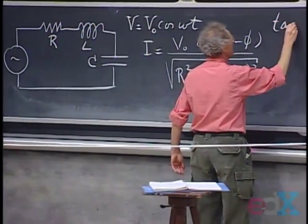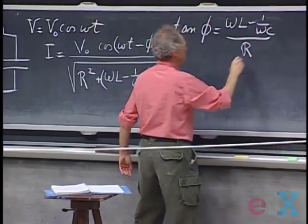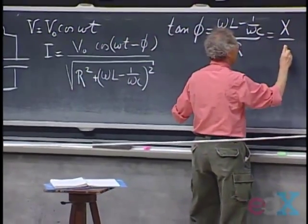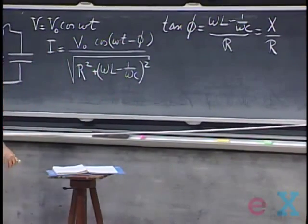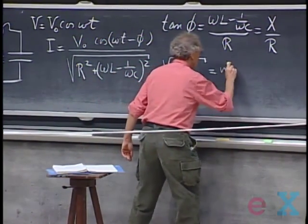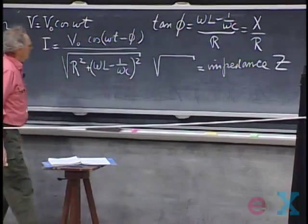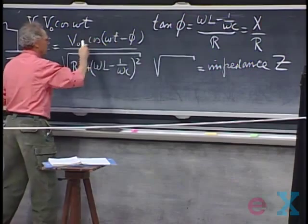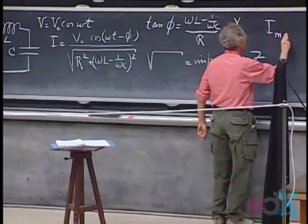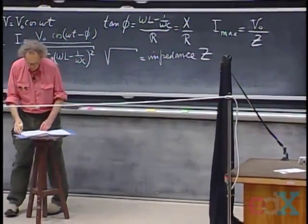The tangent of phi is (omega*L minus 1/(omega*C)) divided by R. We call the numerator the reactance, for which we give the symbol X, so tan(phi) = X/R. This whole square root we call the impedance Z, with units of ohms. The maximum current, I_max, is then V_0 divided by Z when the cosine term is plus or minus one.